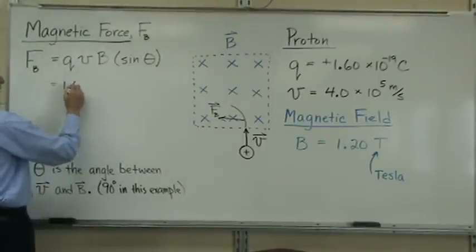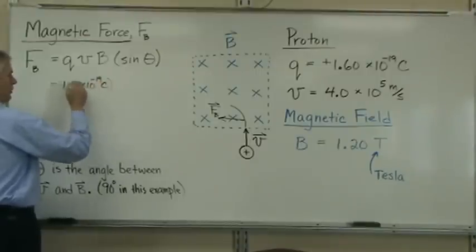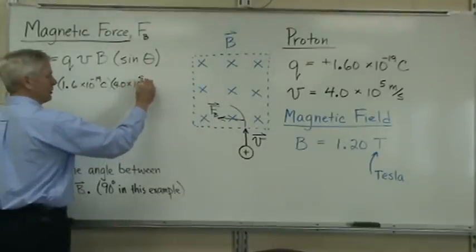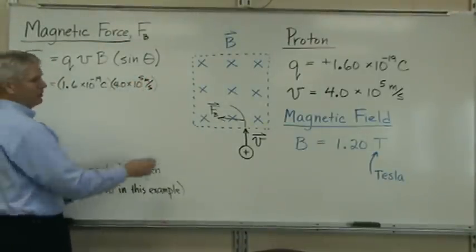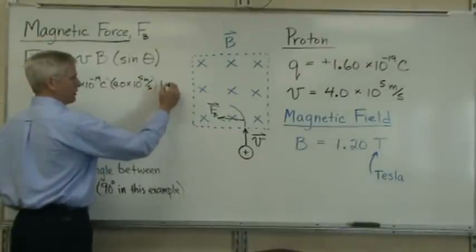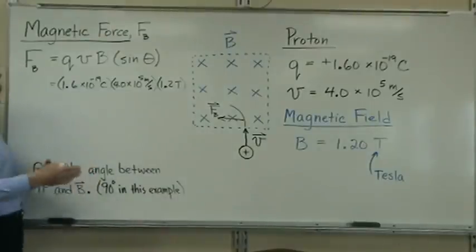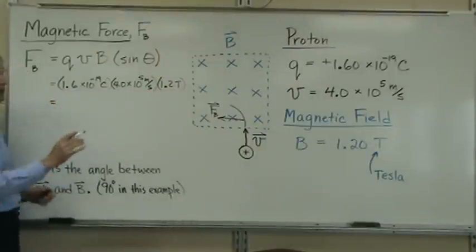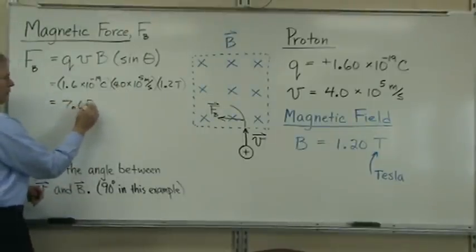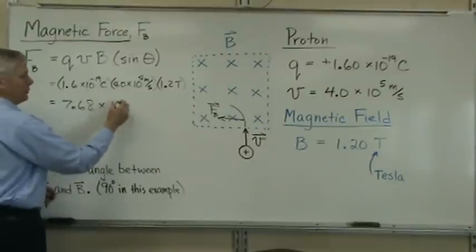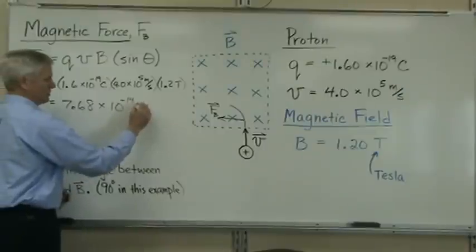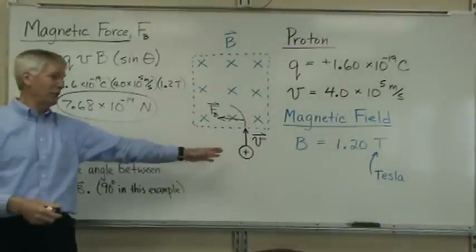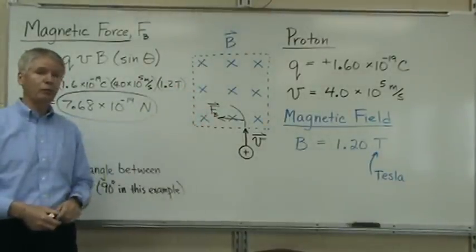The charge is 1.6 times 10 to the minus 19th Coulombs. The velocity, 4.0 times 10 to the 5th meters per second. And B, the magnetic field magnitude is 1.2 tesla. Sine of 90 degrees is 1, so that doesn't affect it this time. If we do this product, 1.6 times 4 times 1.2, I did it earlier, it's 7.68. It's going to be times 10 to the minus 14th, and the units for force are newtons. So that's the magnetic force acting on that proton with that velocity as it goes at right angles to this magnetic field of 1.2 tesla.